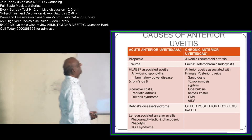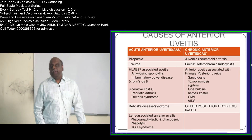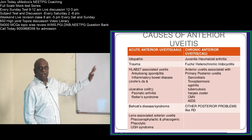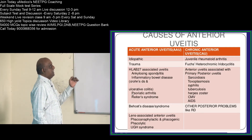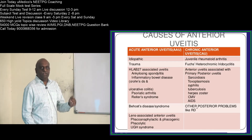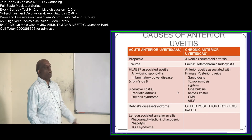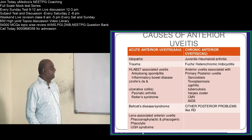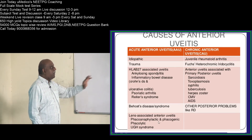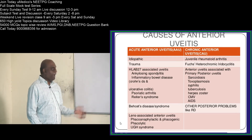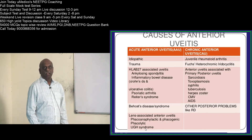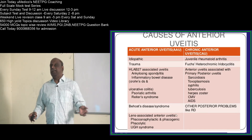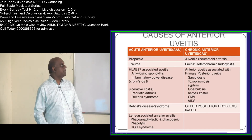Anterior uveitis is associated with HLA-B27 conditions like ankylosing spondylitis, psoriatic arthropathy, and Reiter's syndrome. Trauma also causes acute anterior uveitis. Phacoanaphylactic, phacogenic, and phacolytic conditions are lens-associated causes of anterior uveitis.